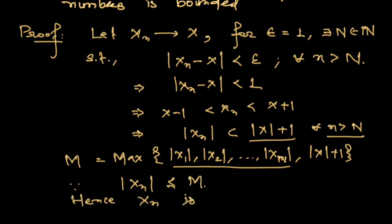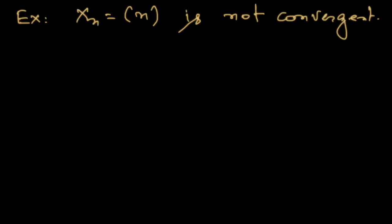We know that the sequence of natural numbers 1, 2, 3, 4, ... is not bounded, so it is not convergent. To prove this by contradiction: assume the sequence is convergent. If it is convergent, then it must be bounded. But the set of natural numbers is not bounded, so our assumption is wrong. Therefore the sequence of natural numbers is not convergent.